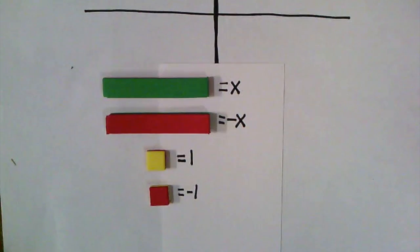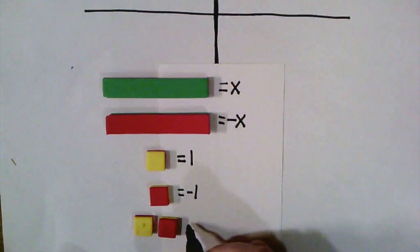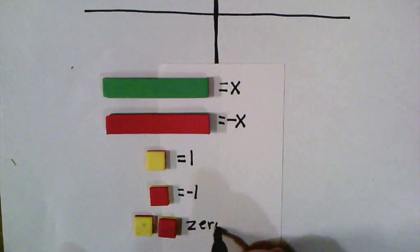The last thing we have to make sure we understand before we start with this strategy is something called a zero pair. And a zero pair occurs when we have a positive and a negative together. Because we have a positive one and a negative one when we add them together, it ends up equaling zero. And that's why we call it a zero pair.